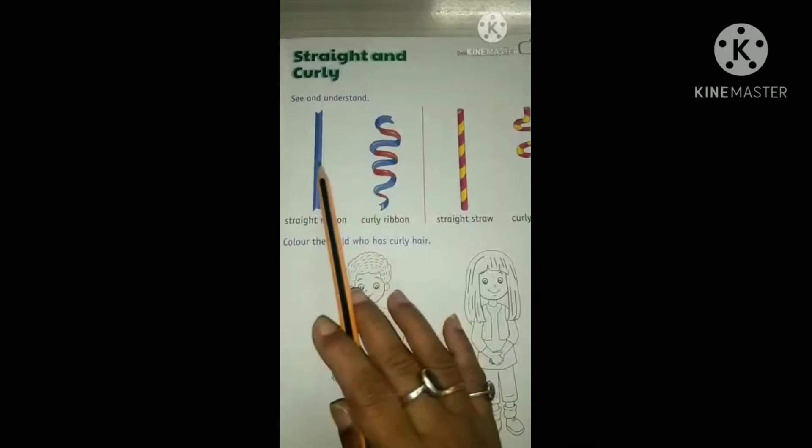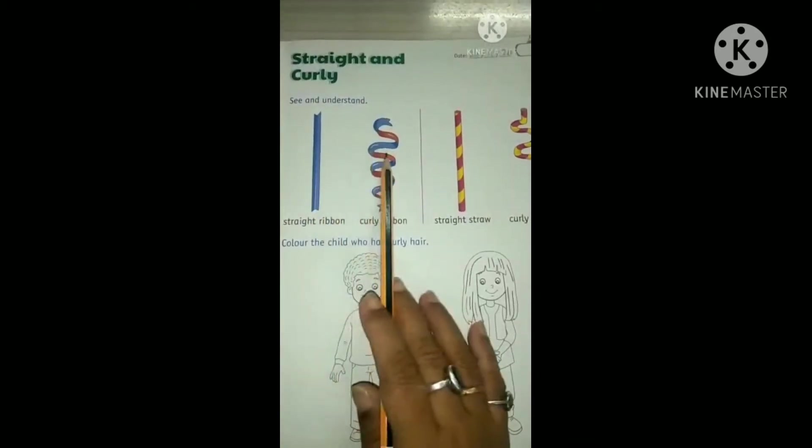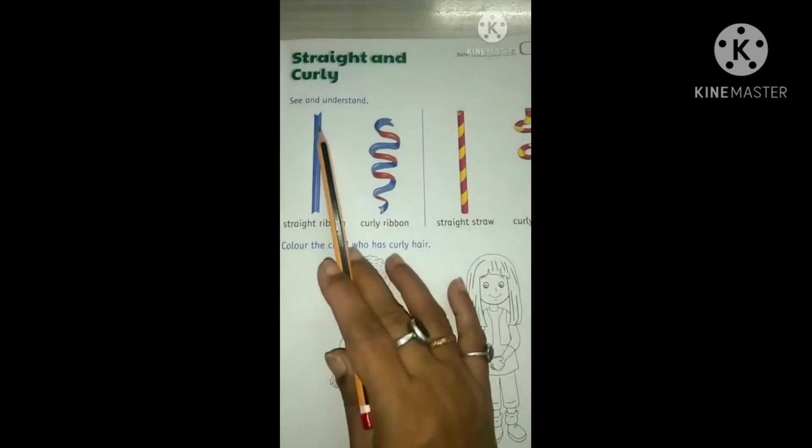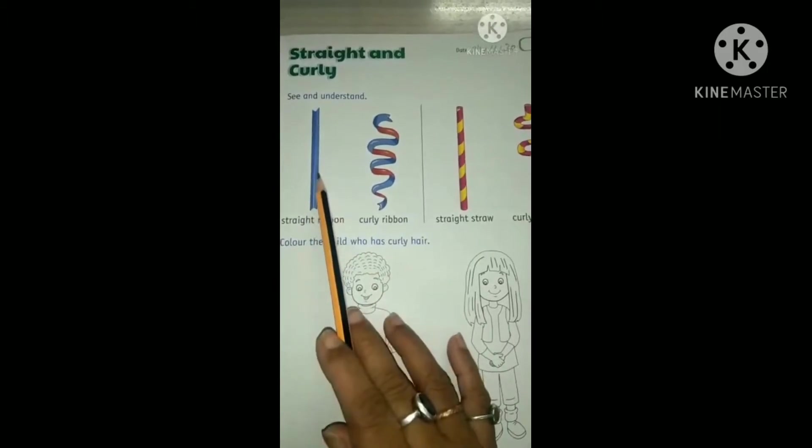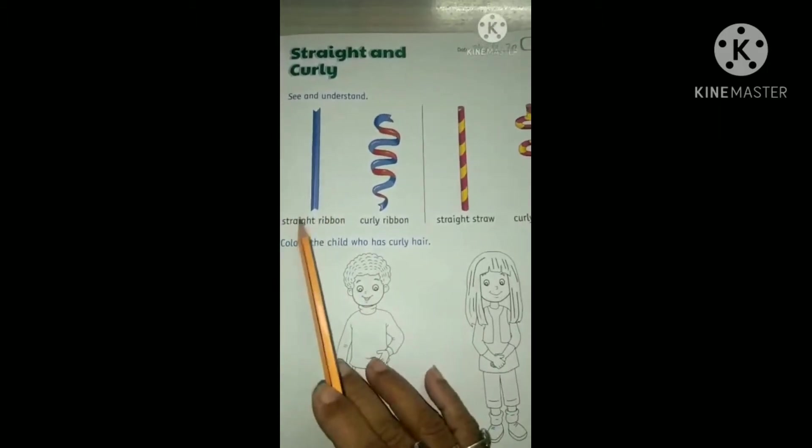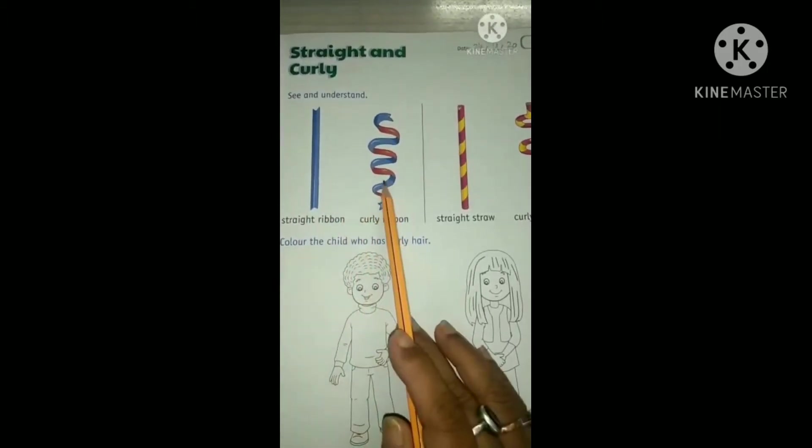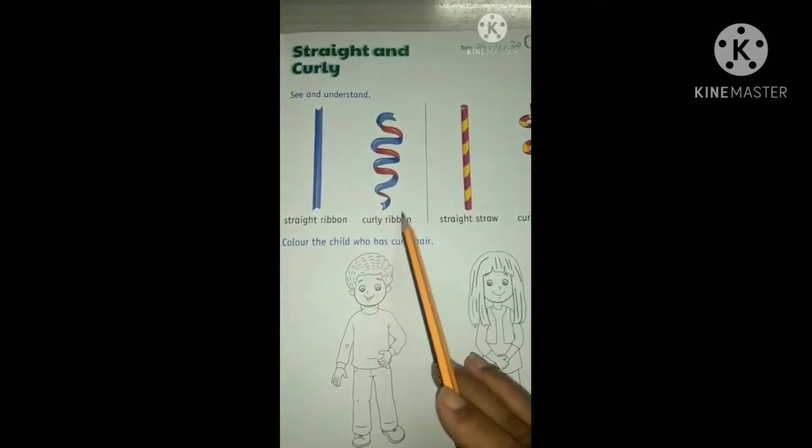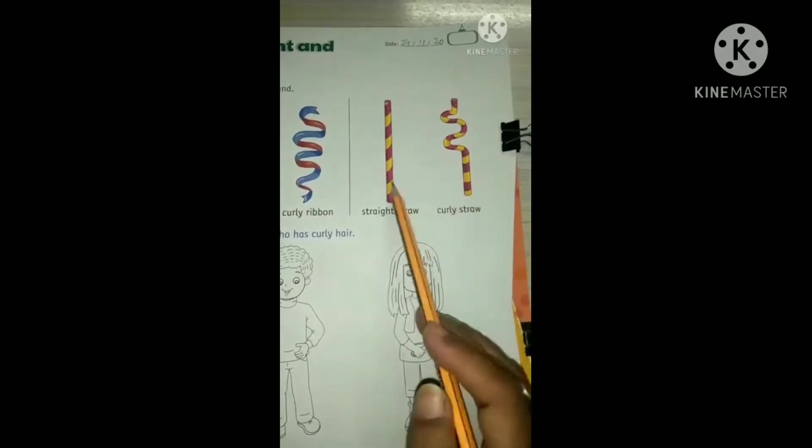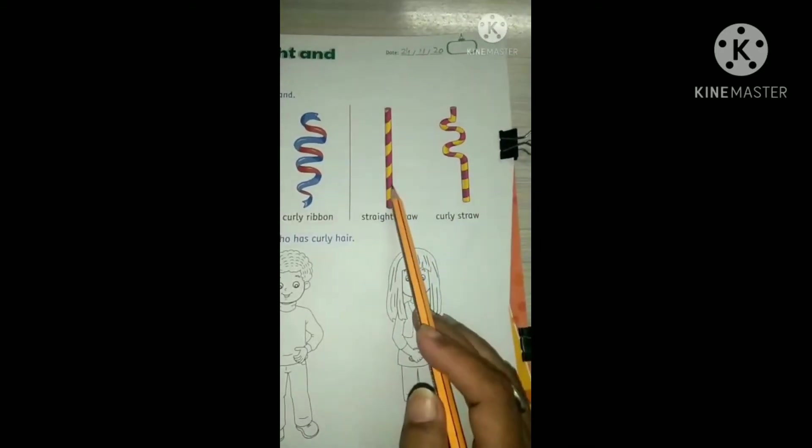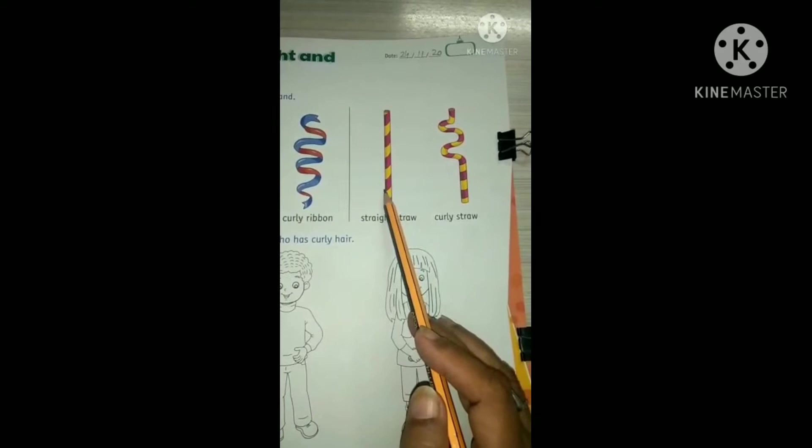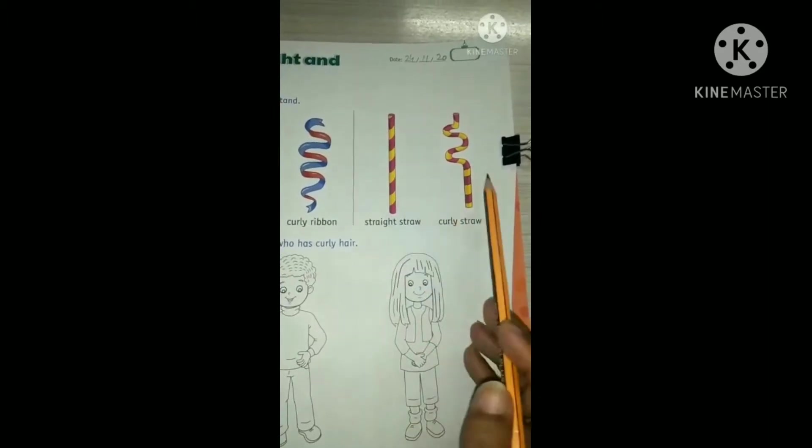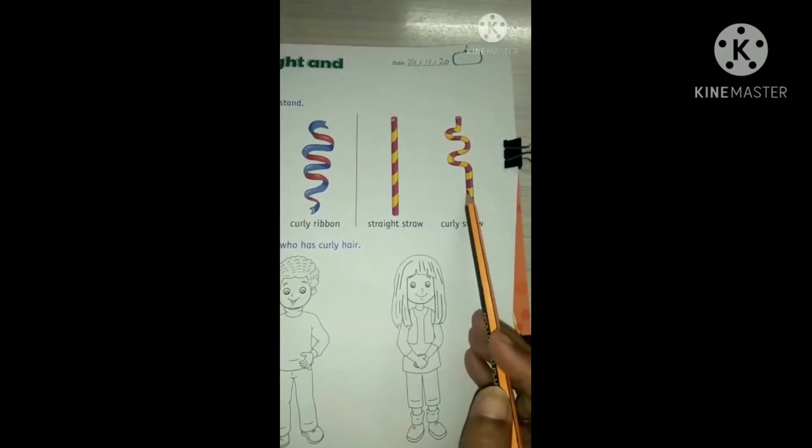See, we have two ribbons here. Now, one is straight, so we can say this one is straight ribbon and this one is curly ribbon. And see, we have two straws too. This one is a straight straw and this one is a curly straw.